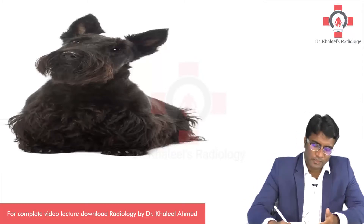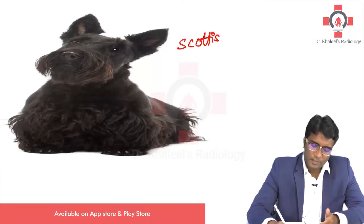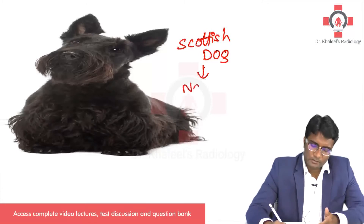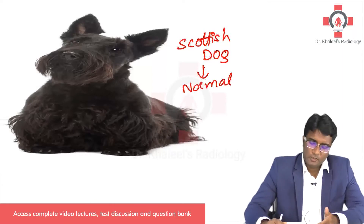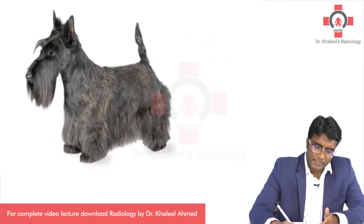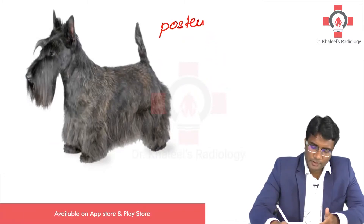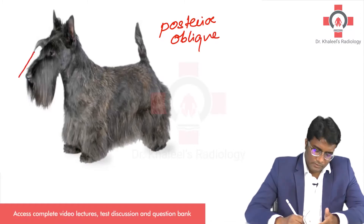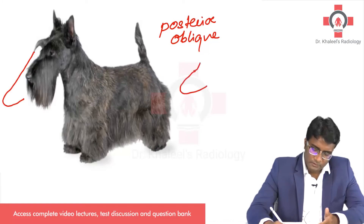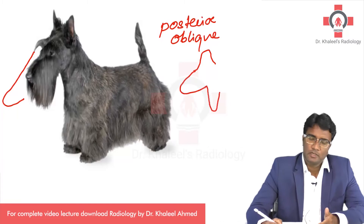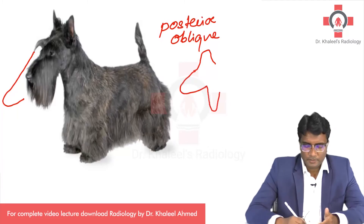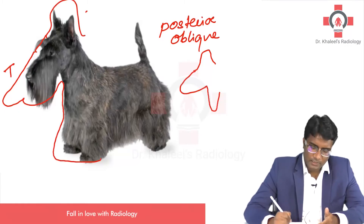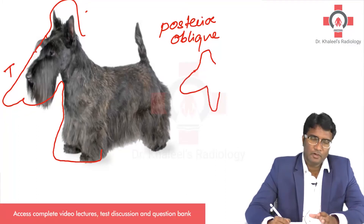Please look at this image. This is a Scottish dog appearance, and where do we see this? This is a normal finding. Scottish dog appearance is a normal finding. When you see the lumbar spine especially in posterior oblique projections on radiographs, you will see that the transverse process, the superior articular facet and inferior articular facet of the vertebral bodies give this appearance of a Scottish dog.